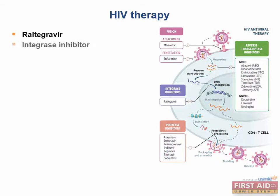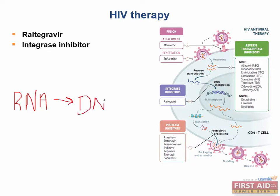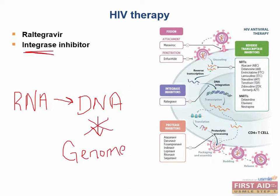Raltegravir is the integrase inhibitor used in HIV therapy. This drug was initially approved only for individuals with HIV strains resistant to HAART drugs, but now it can be used in all patients. The integrase enzyme is responsible for integrating HIV's reversely transcribed DNA into the host genome — HIV reversely transcribes its RNA into DNA, and that DNA is integrated into the host cell genome by integrase. By inhibiting this step, Raltegravir prevents the virus from becoming part of the host cell.